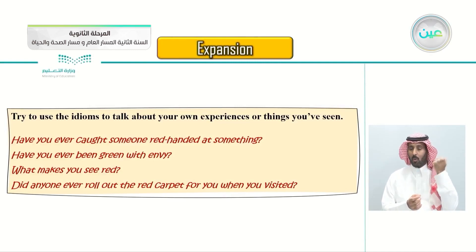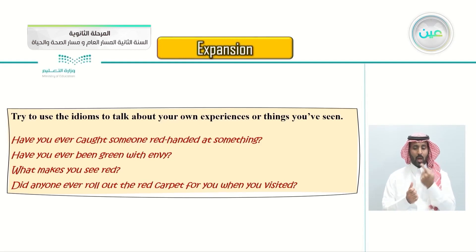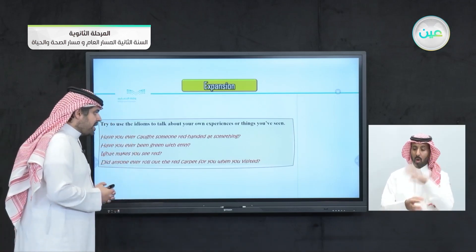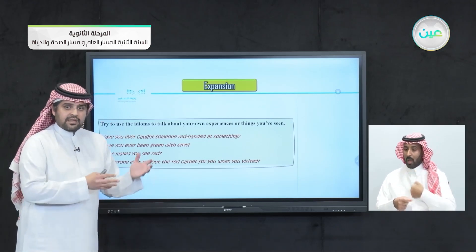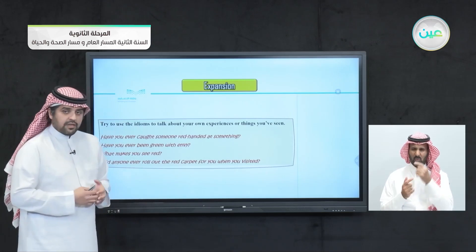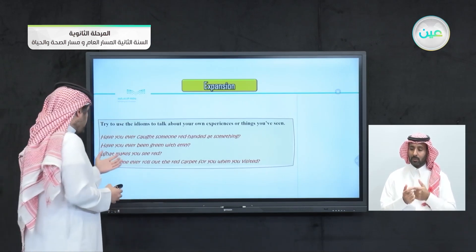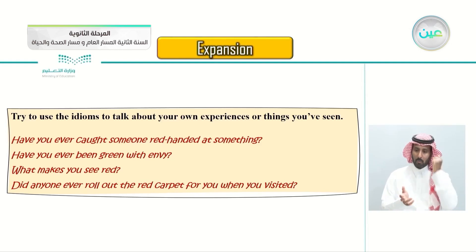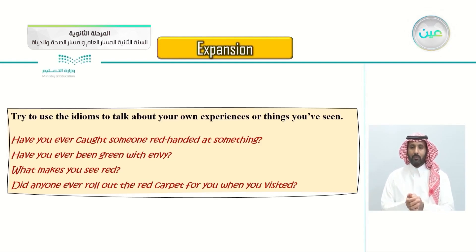Try to use the idioms to talk about your own experiences. Maybe you can say 'One time I got caught red-handed' or 'I had a green thumb - maybe you planted some plants.' Have you ever caught someone red-handed? Maybe you caught your brother trying to take your books or pens. Have you ever been green with envy - have you ever envied someone? What makes you see red? Did anyone ever roll out the red carpet for you when you visited - meaning they welcomed you with a warm heart?